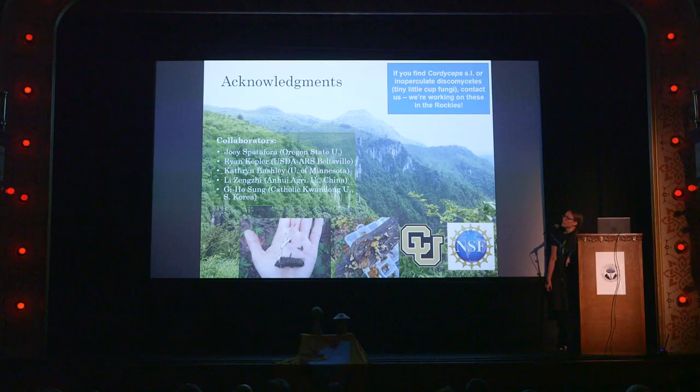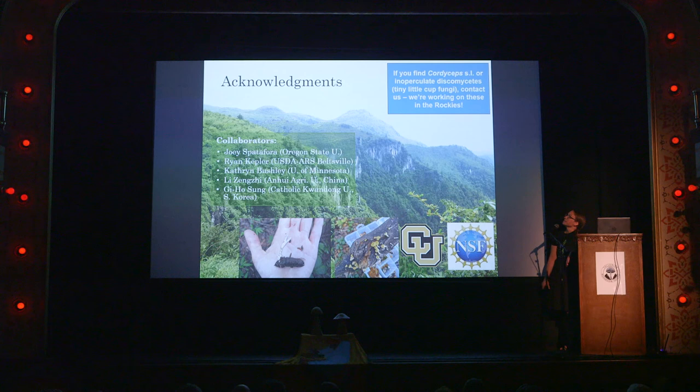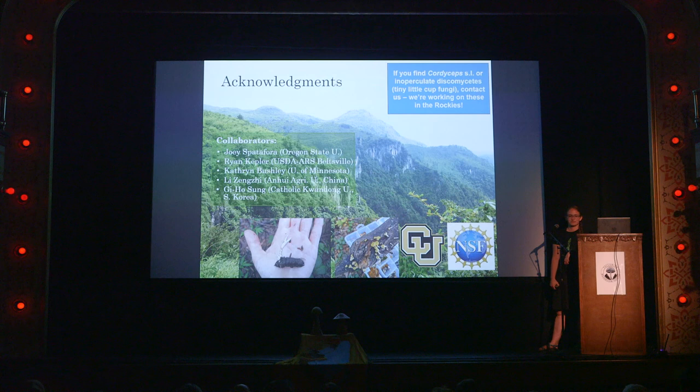If anything, I just want to leave you with the fact that there's still so much we don't know. If every cordyceps-like fungus is producing just five new compounds — and there's pretty good evidence that's the case — there are more than 2,500 compounds waiting to be discovered that we just don't have the manpower to isolate. I'd like to really thank my collaborators over the years from the US, China, and Korea. And if you ever find any cordyceps, especially in the Rockies, or tiny little cup fungi, our lab is working on those. Thank you.